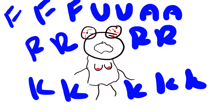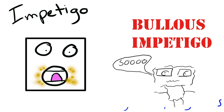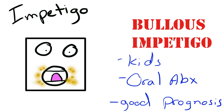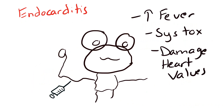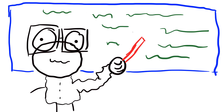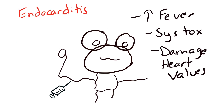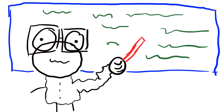Staph can also cause impetigo — erythematous papules and bullous impetigo around the mouth and face. It's usually itchy in some kids and just requires an oral antibiotic. It can also cause acute endocarditis, which causes high fevers and systemic toxicity, and will definitely damage the heart valves. It's usually found in IV drug users, because staph is part of normal skin flora — if you're constantly injecting needles into your skin, you're going to push some of that staph into your blood system.